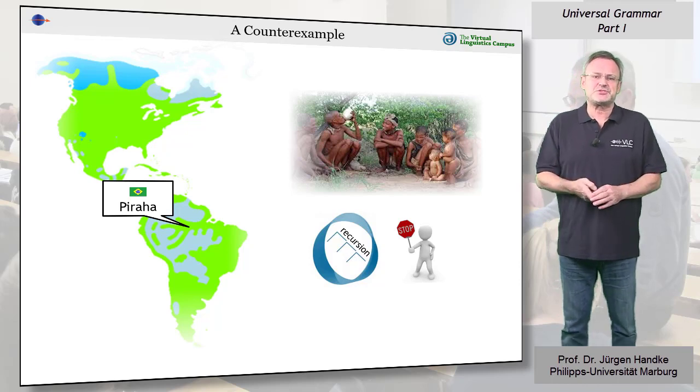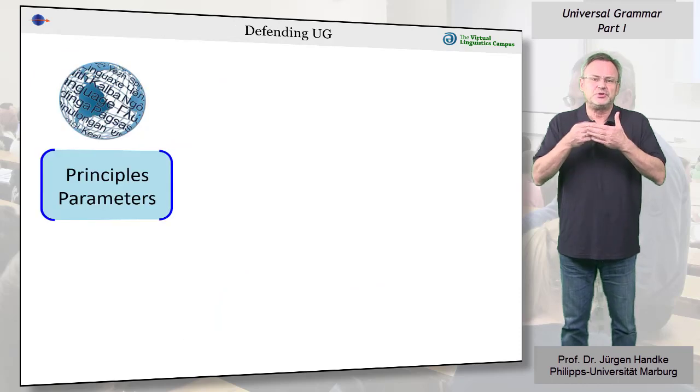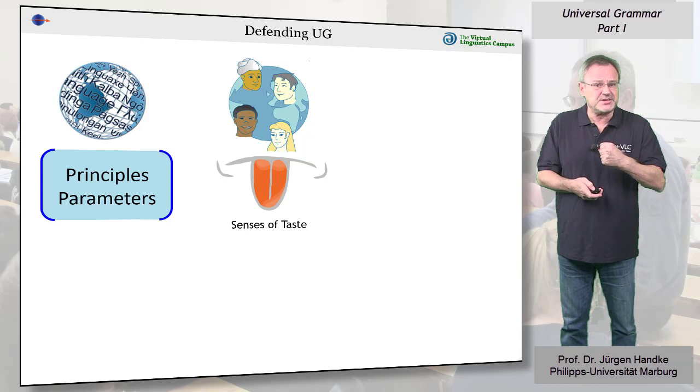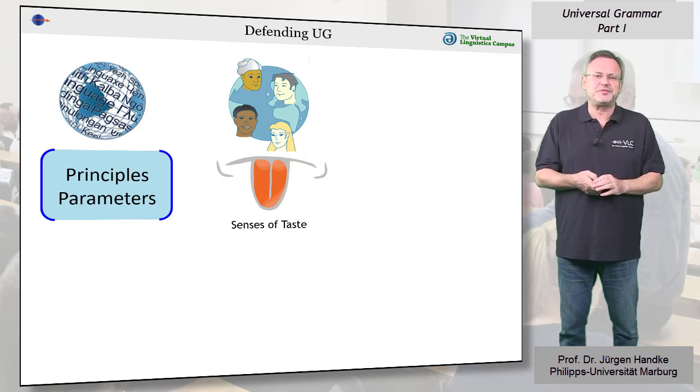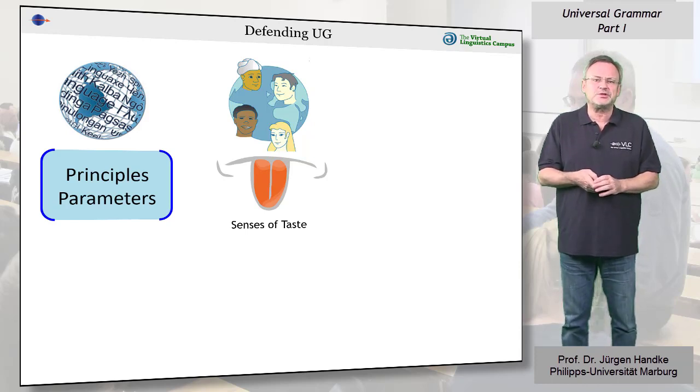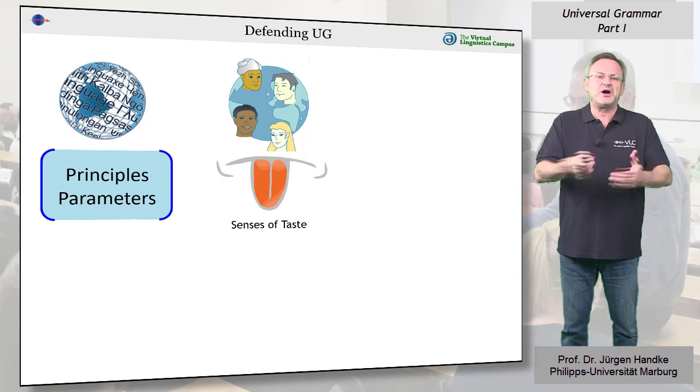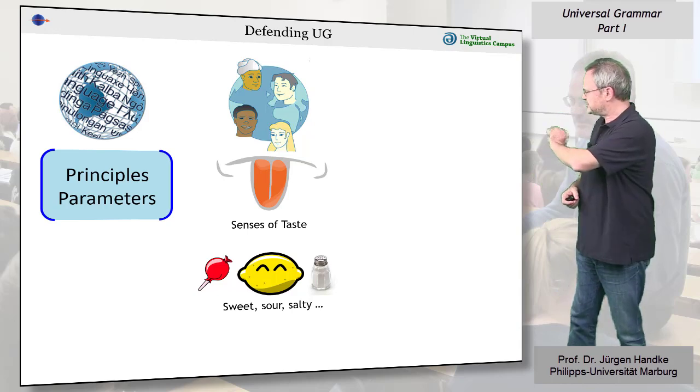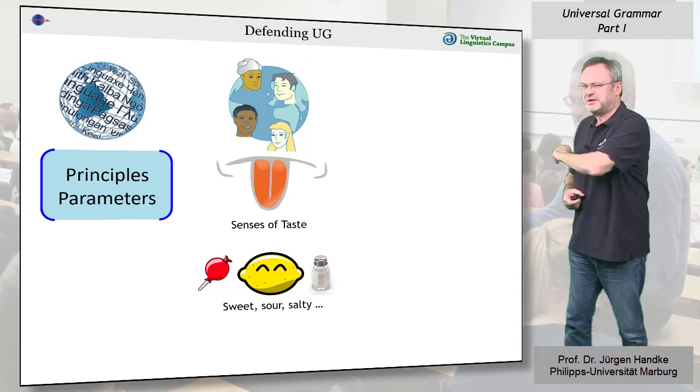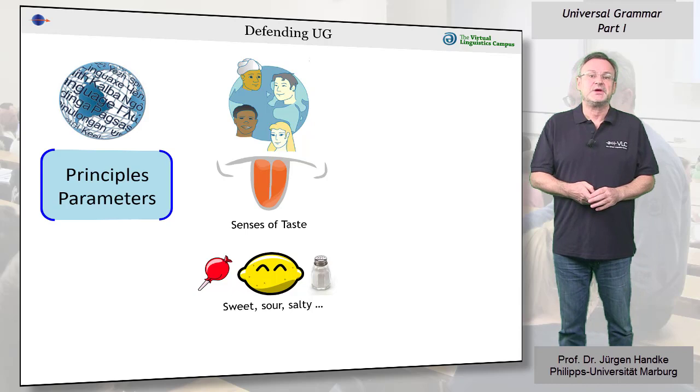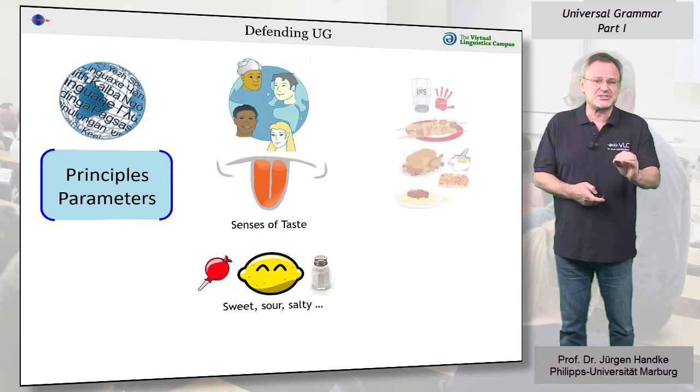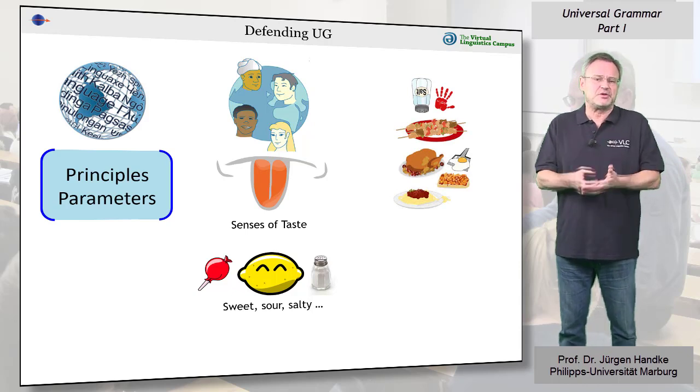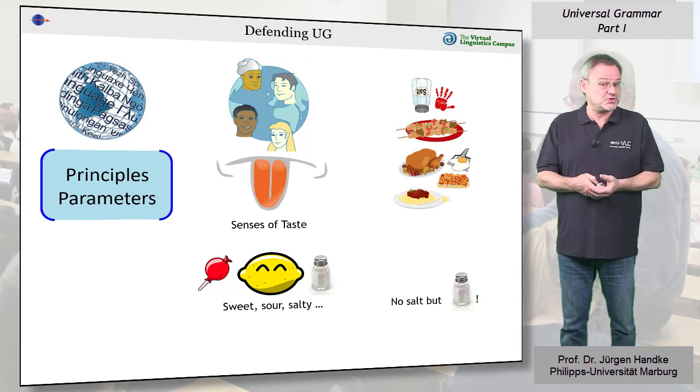Defenders of Universal Grammar make the analogy that the universal parameters and principles are like our senses of taste. While culture and geography may produce variations in worldly cuisines, we are all nevertheless born with a basic set of tastes – sweet, sour, salty, bitter, and so on. Just because a culture lacks salt to season food does not mean that the members of that culture lack the ability to taste salt.